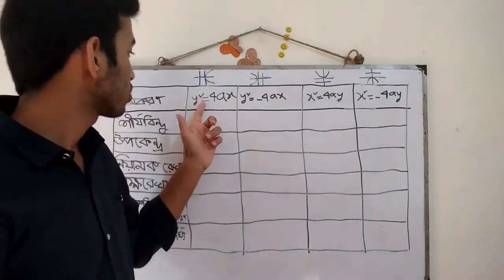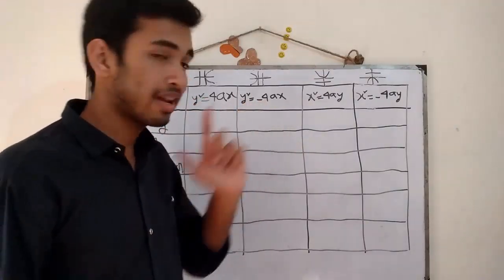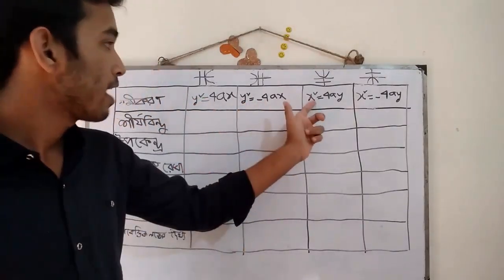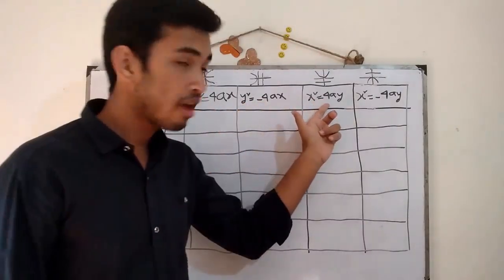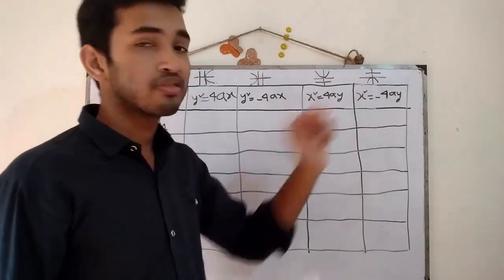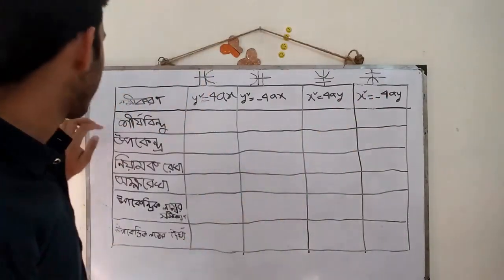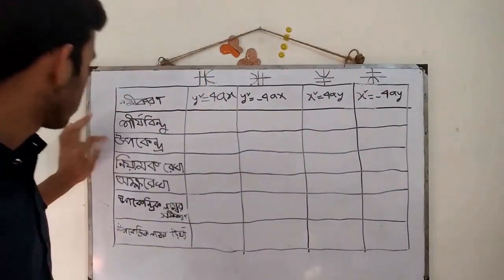We can find out that y squared is 4x, y squared is minus 4x, x squared is 4y, x squared is minus 4y.